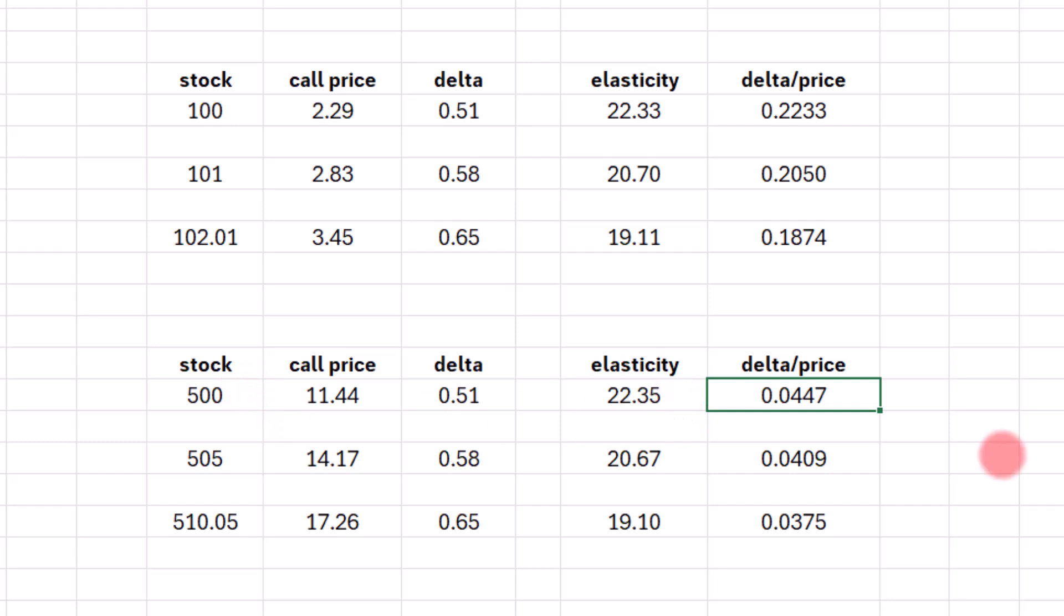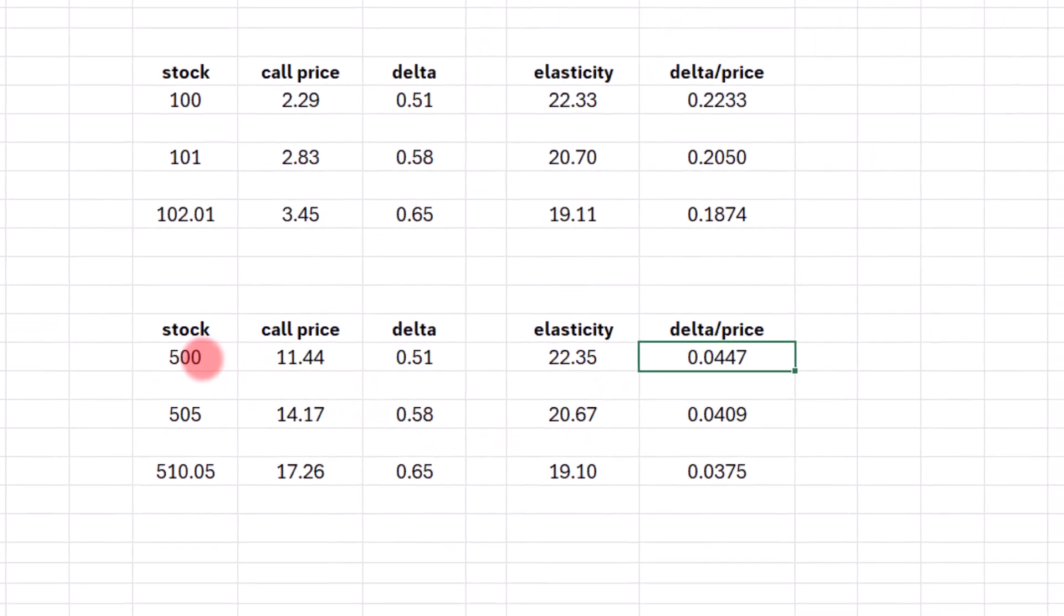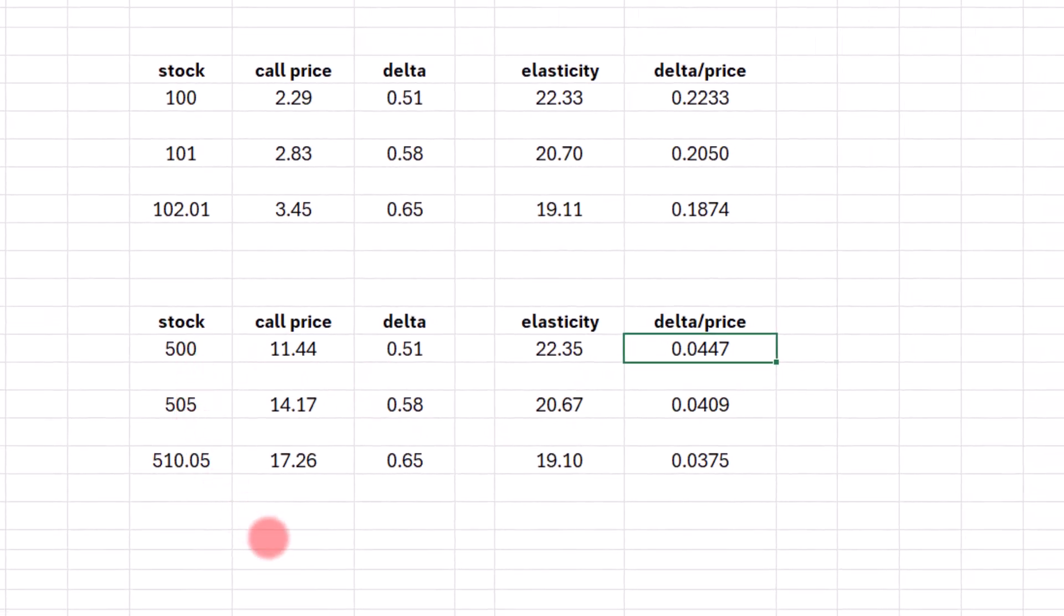Because again, as that option starts going deeper and deeper in the money, we start approaching the stock. And as we approach the stock's price, we're obviously losing the leverage. So just to show that this calculation works as well, if we come up with an elasticity of 22.3 and the stock rises 1% from 500 to 505, let's do equals this number divided by that number. And we get 1.238, closer to 24%. But again, that's because we have gamma in here.